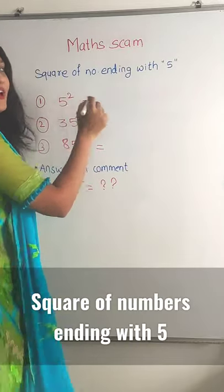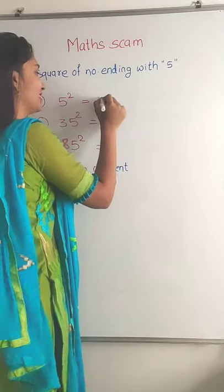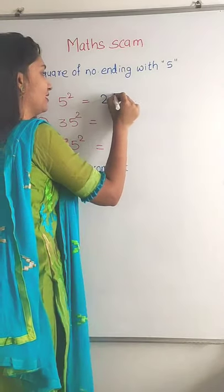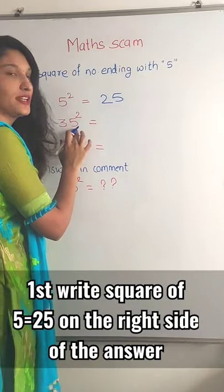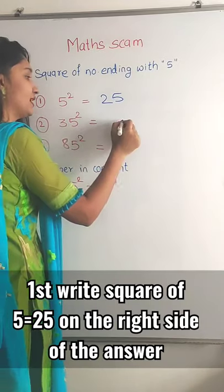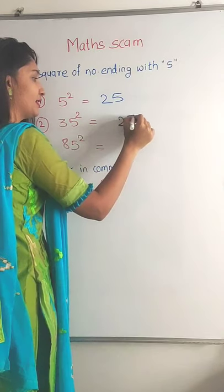Hi everyone. The square of 5 is 25, so for the square of 35, 5 squared is 25.